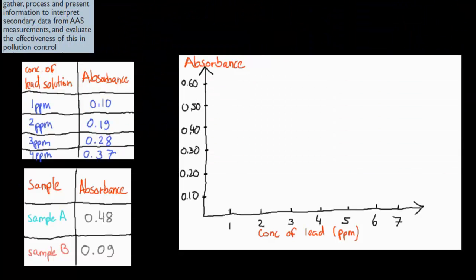The other example would be, every time this kind of question comes up, there's always a graph that you have to actually make. This is the same data we had beforehand, the standard data. You would have this kind of graph where you have absorbance on one side and concentration of lead on the other. What you do is simply plot that data. So concentration of lead one part per million is 0.1, two ppm is 0.19 roughly here, three ppm is 0.28 roughly here, and four ppm is 0.37. Then you would do a line through it, so it's like a straight line.